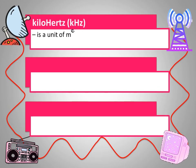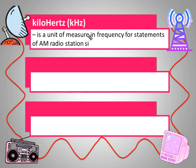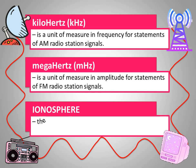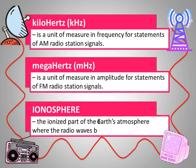Kilohertz: is a unit of measure in frequency for statements of AM radio station signals. Megahertz: is a unit of measure in amplitude for statements of FM radio station signals. Ionosphere: the ionized part of the Earth's atmosphere where the radio waves bounce back and forth.